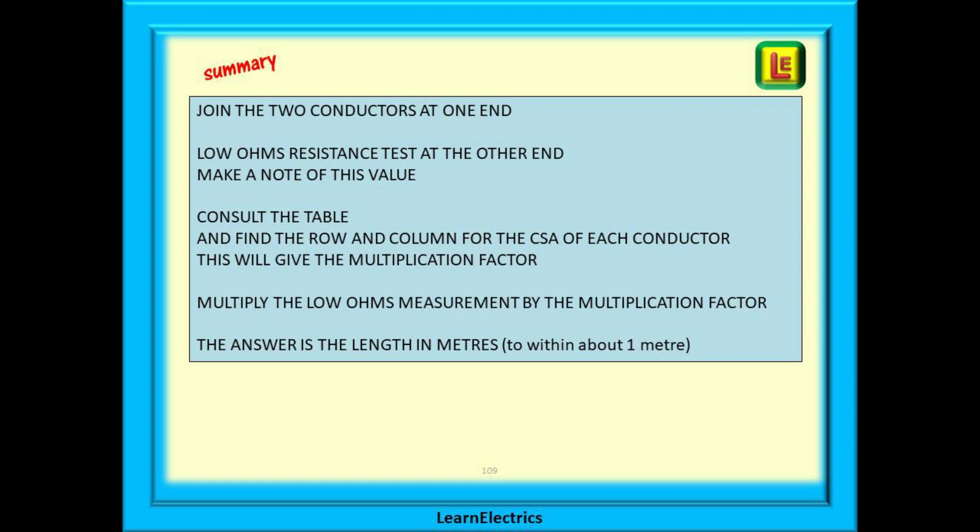To do this, we find the row and column for the CSA of each conductor, where they cross. This will give us the multiplication factor to use. Multiply the low ohms measurement by the multiplication factor. And the answer is the length in metres,